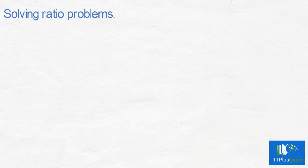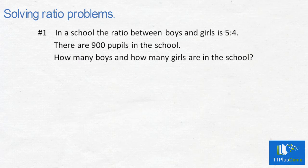Solving ratio problems. Example 1: In a school, the ratio between boys and girls is 5 to 4. There are 900 pupils in the school. How many boys and how many girls are in the school?